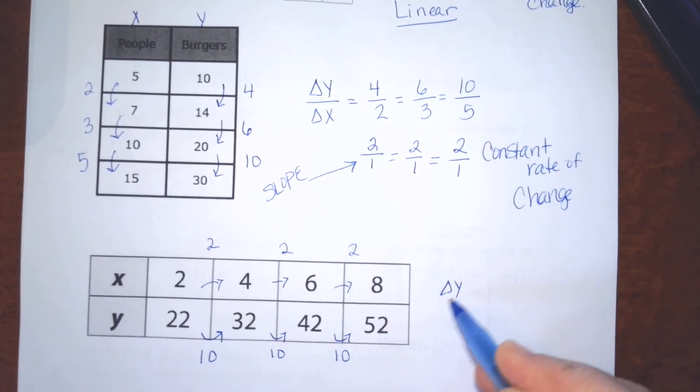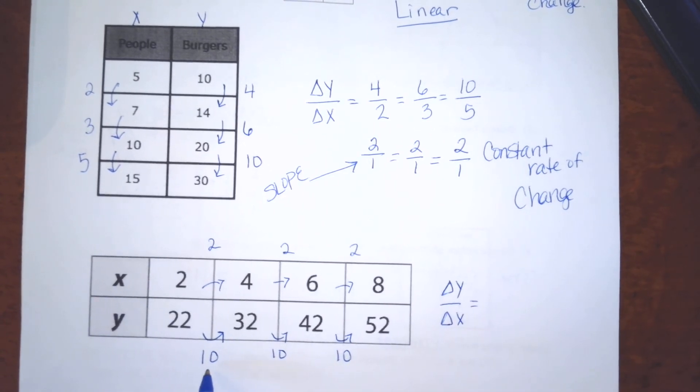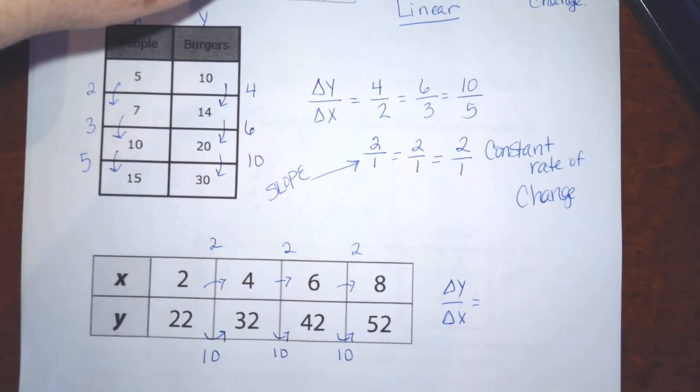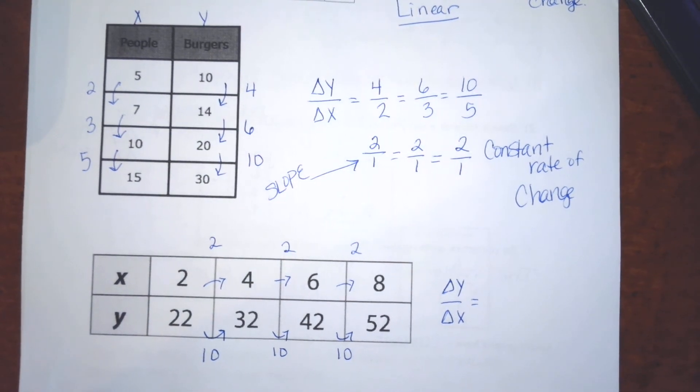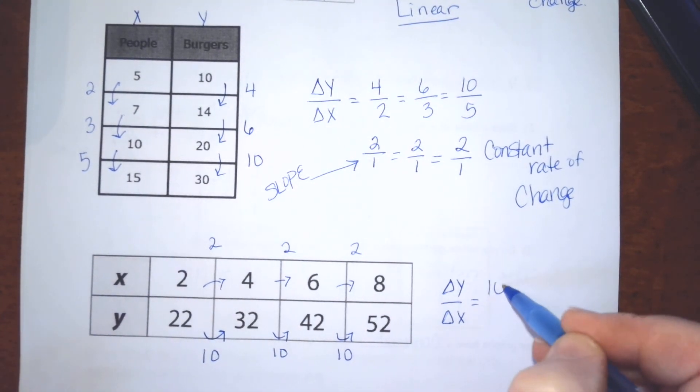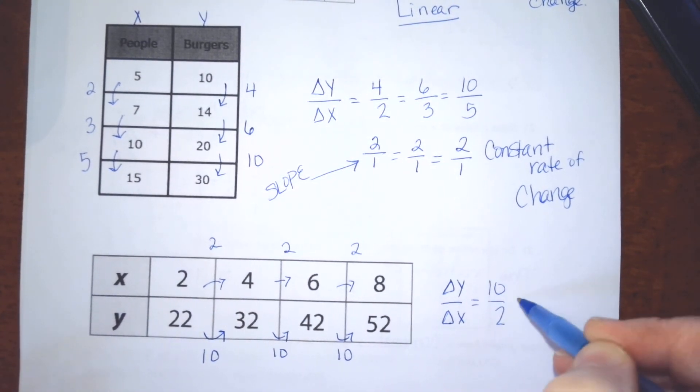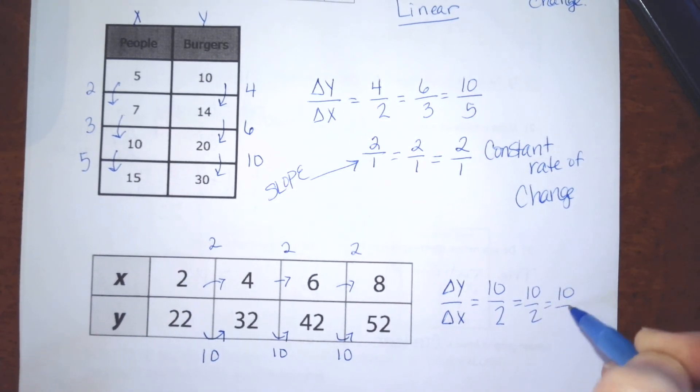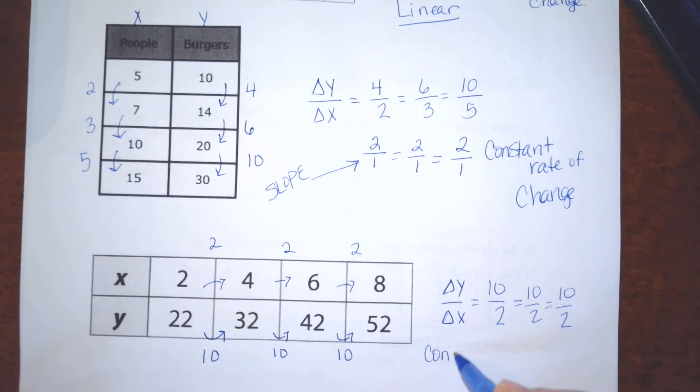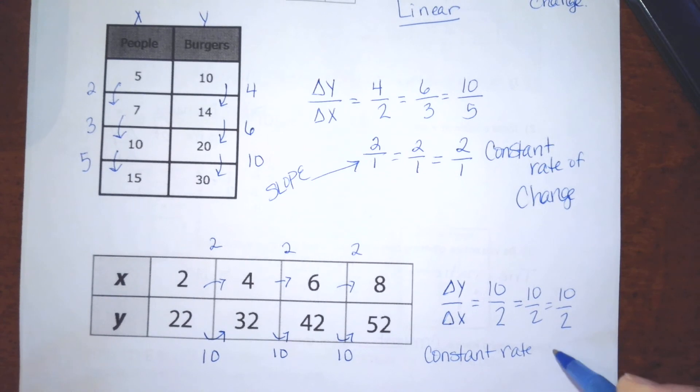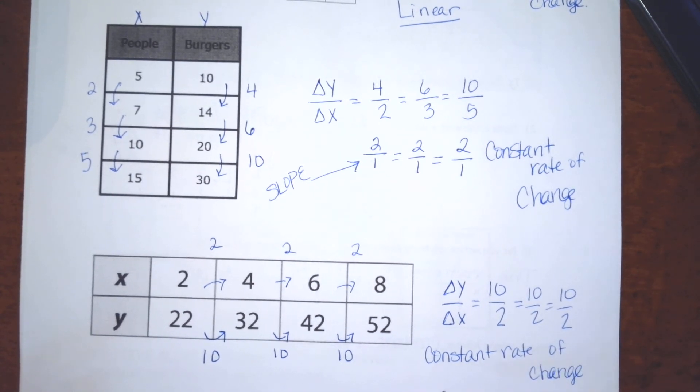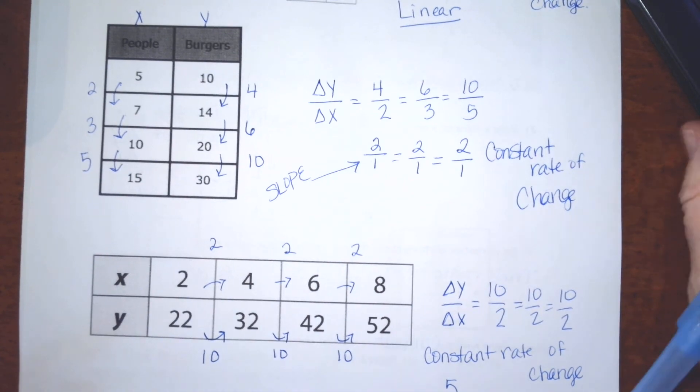Be careful when you make your ratios that you use the change in y over the change in x. So, this is 10 over 2, and 10 over 2, and 10 over 2. So, yes, it's a constant rate of change. And its ratio is 5 to 1.